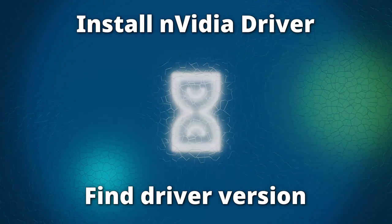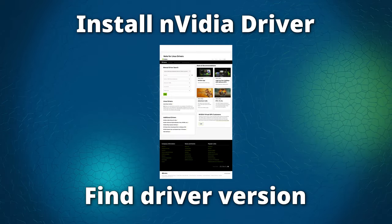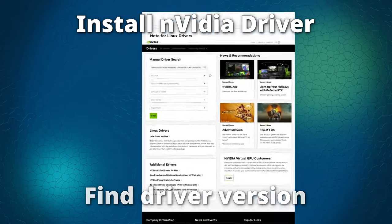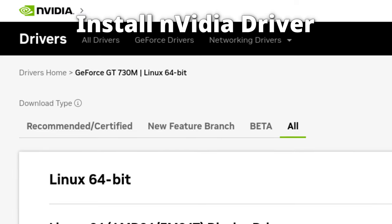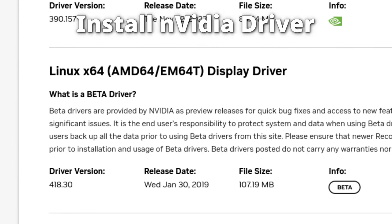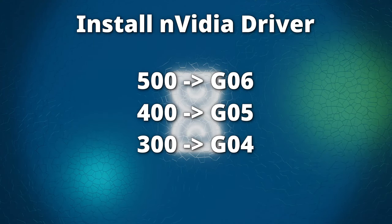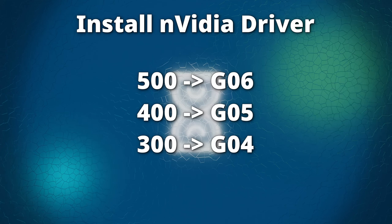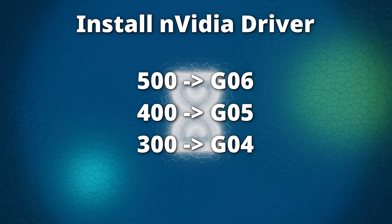To find out which driver you need, go to NVIDIA's webpage at nvidia.com/drivers and search for your GPU. Open the 'All' tab and look for the most recent driver version shown. If the driver series is 500 or newer, note G06. If it was the 400 series, note G05. And if it was the 300 series, note G04.